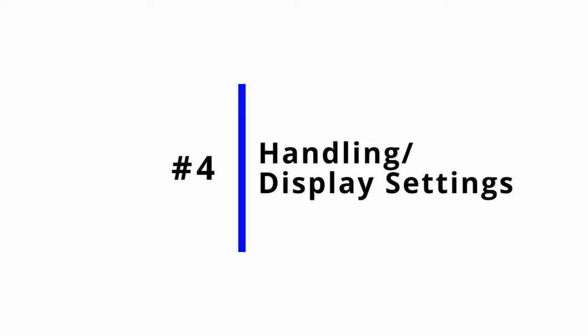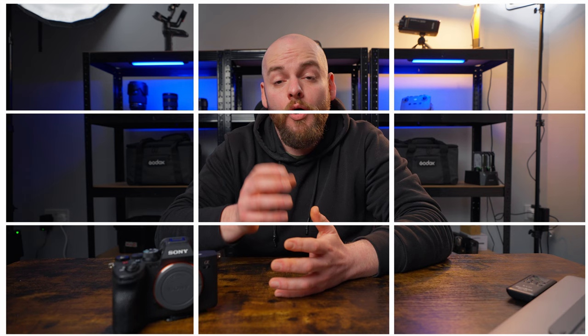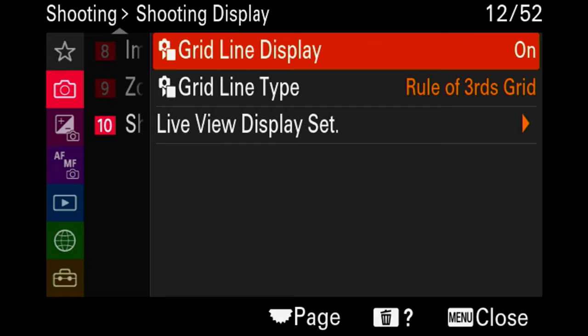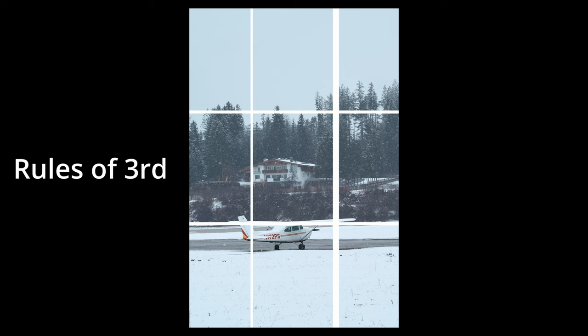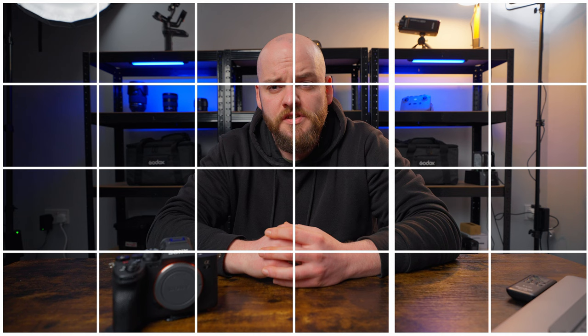The next three settings relate to the handling of your camera and its display. I personally like to switch on the rule of thirds grid, which is displayed on your screen. This helps you create better framing and composition for your photographs. You basically get a grid that breaks down your display into nine or even twenty-four sections, purely to help you achieve better composition.